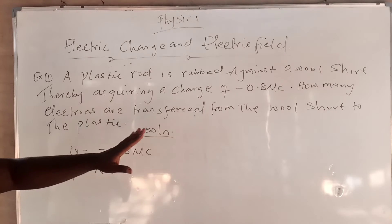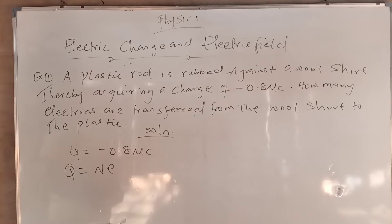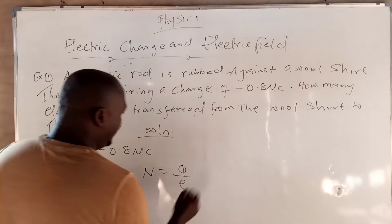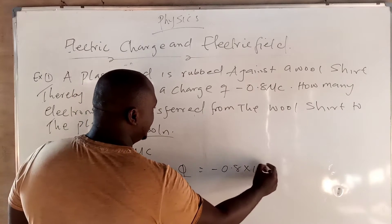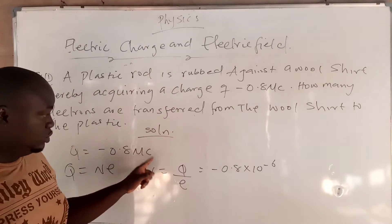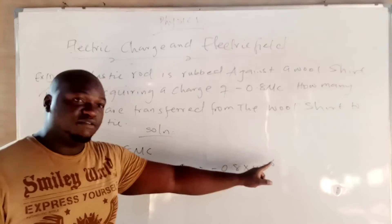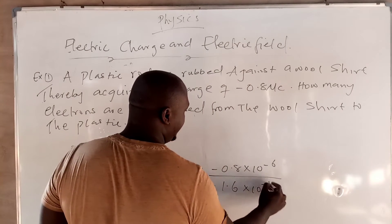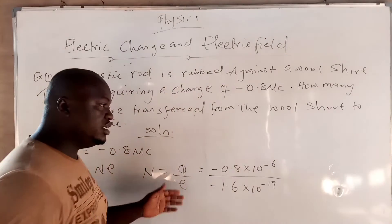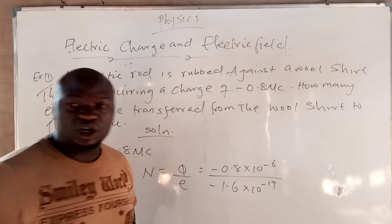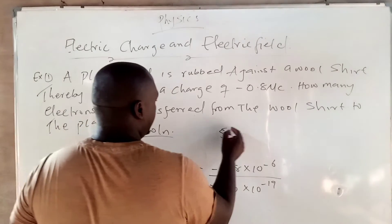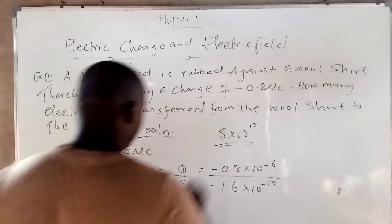We want to calculate how many electrons — N is what we need to find. So all you need to do is N equals Q divided by E. From here, we have minus 0.8 times 10 raised to the power of minus 6, divided by minus 1.6 times 10 raised to the power of minus 19 coulombs. Note that the electron is negatively charged and the proton is always positively charged. If you calculate this, what you should get is 5 times 10 raised to the power of 12.